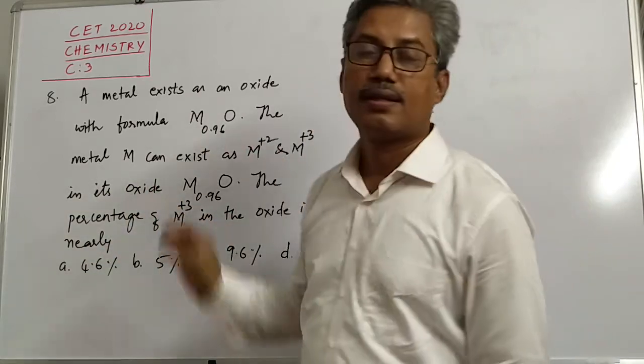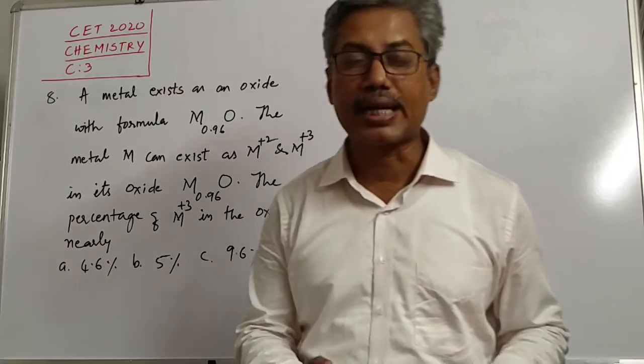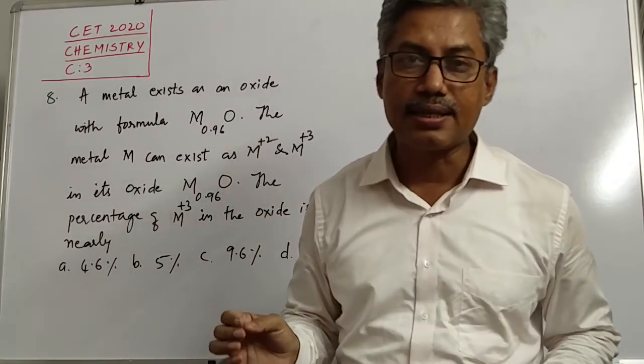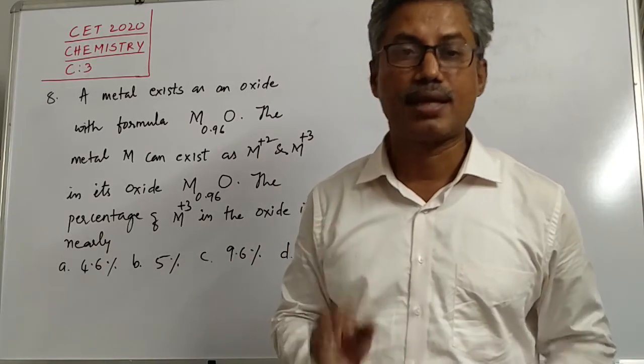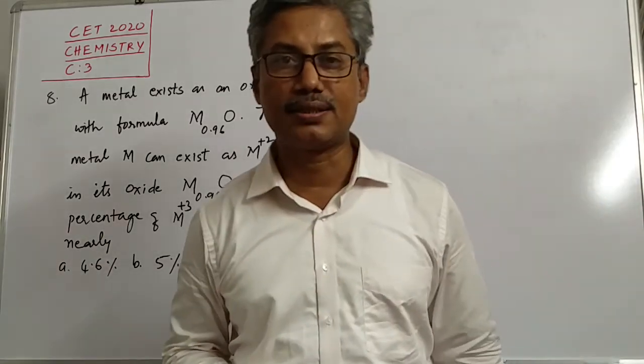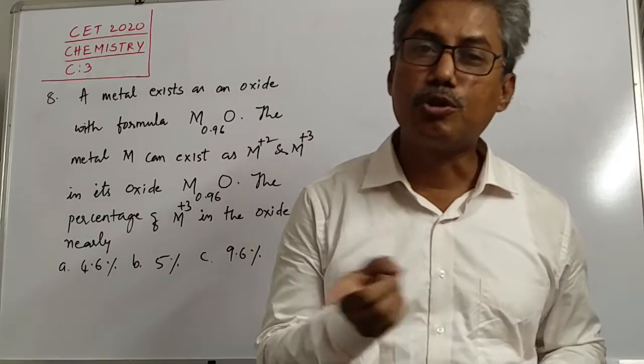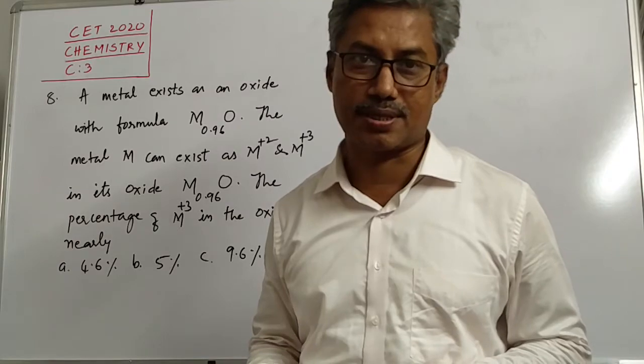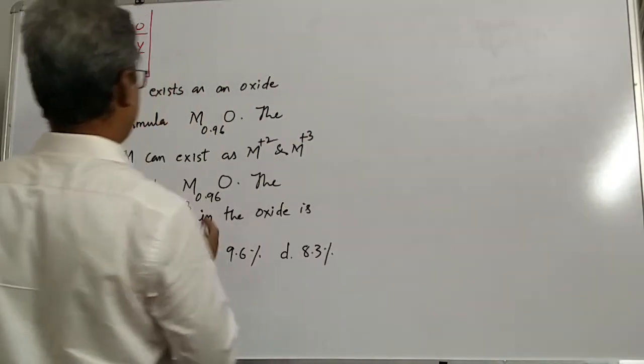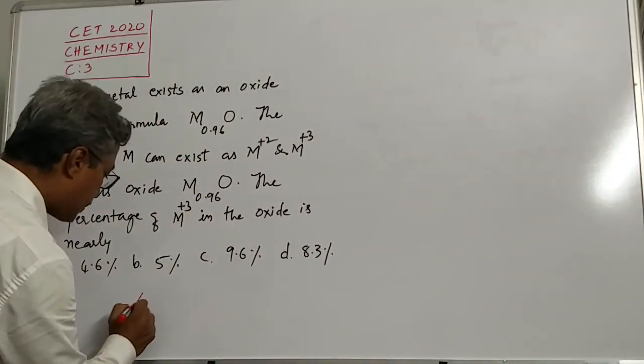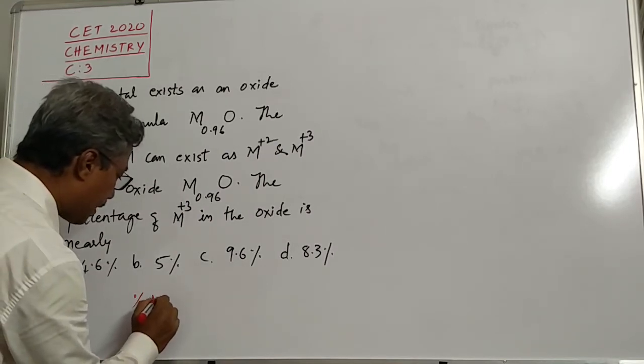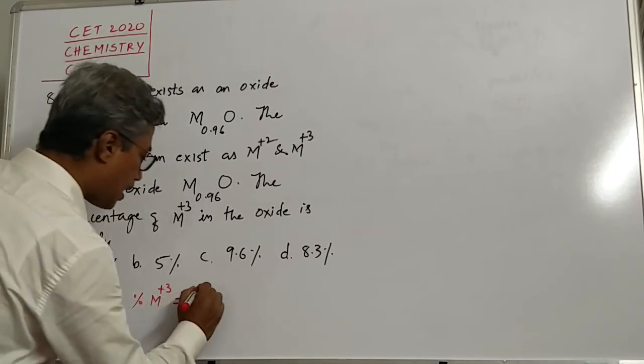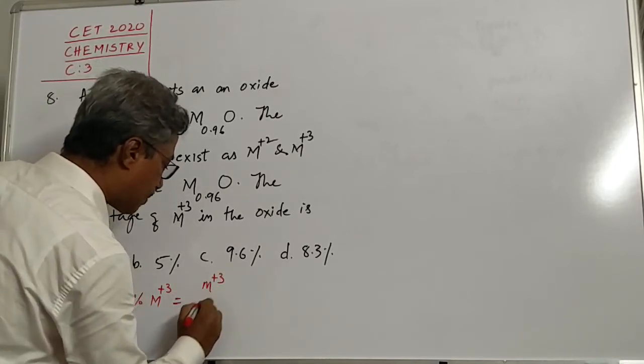So what is given is metal oxide is given in that metal. Metal exists in two oxidation states, plus 3 and plus 2. He is asking, what is the percentage of M plus 3? Students, to know the percentage, you should know whose percentage you are calculating and how much is the total substance. For example, if you look at this, to calculate the percentage of M plus 3, we should know how many M plus 3 ions are present.